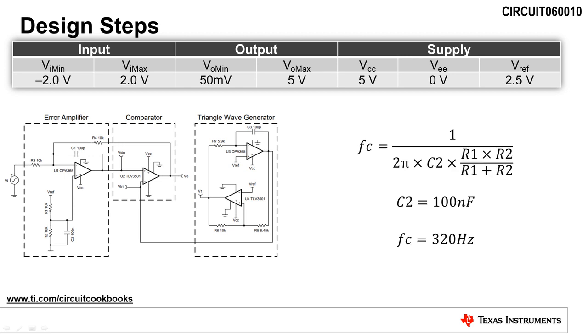Lastly, we will select the capacitor value for C2 to filter noise from the reference voltage Vref. The cutoff frequency due to C2 is equal to 1 divided by 2 times pi times C2 times the equivalent resistance of R1 in parallel with R2. Selecting a capacitor value of 100 nanofarads for C2 sets a cutoff frequency of 320 hertz, which will filter most of the noise in the audio band.